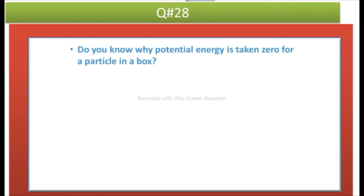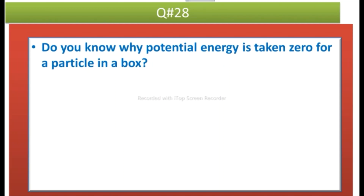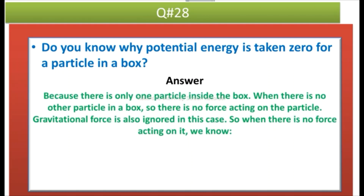The next question is: why is potential energy taken as zero for a particle in a box? Answer: because there is only one particle inside the box and there is no other particle, so there is no force acting on the particle, and gravitational force is also ignored. When there is no force acting on it, we know F is equal to minus dU over dr.